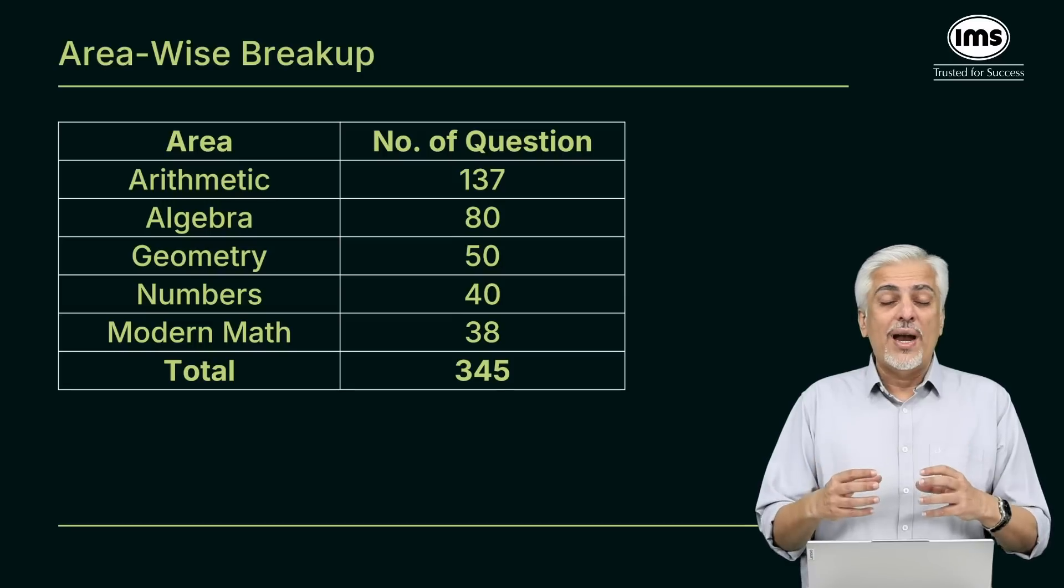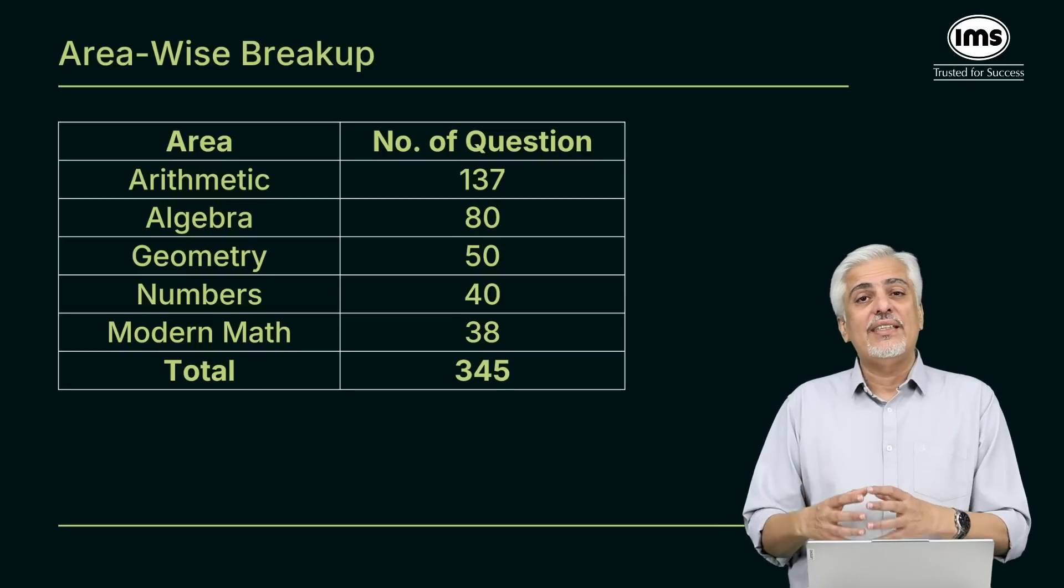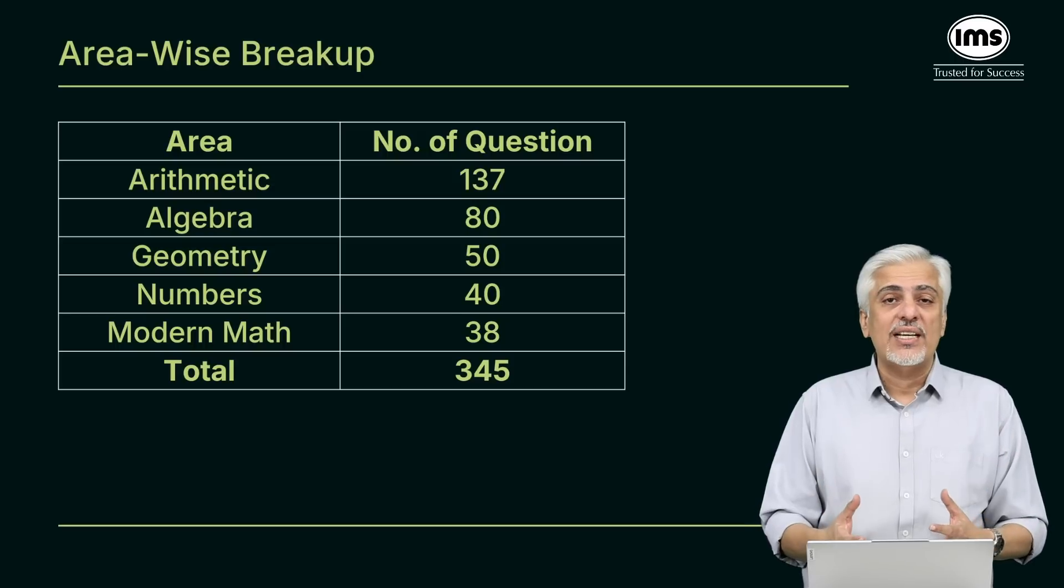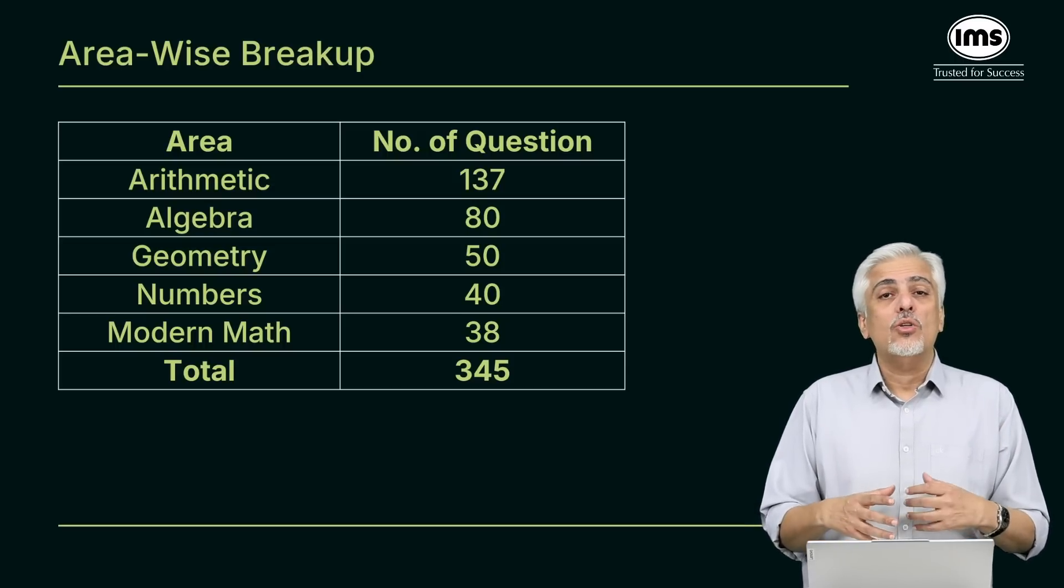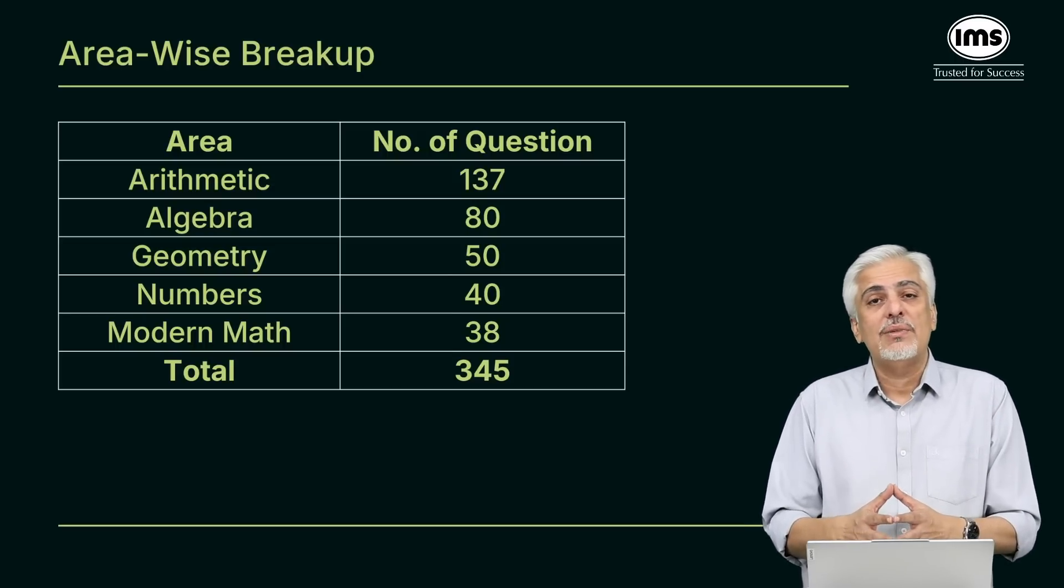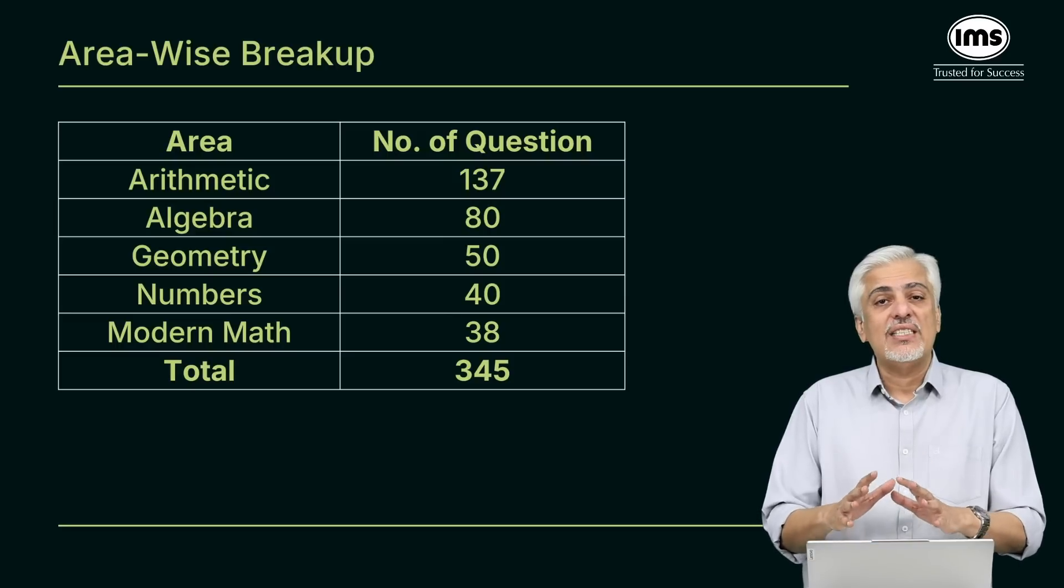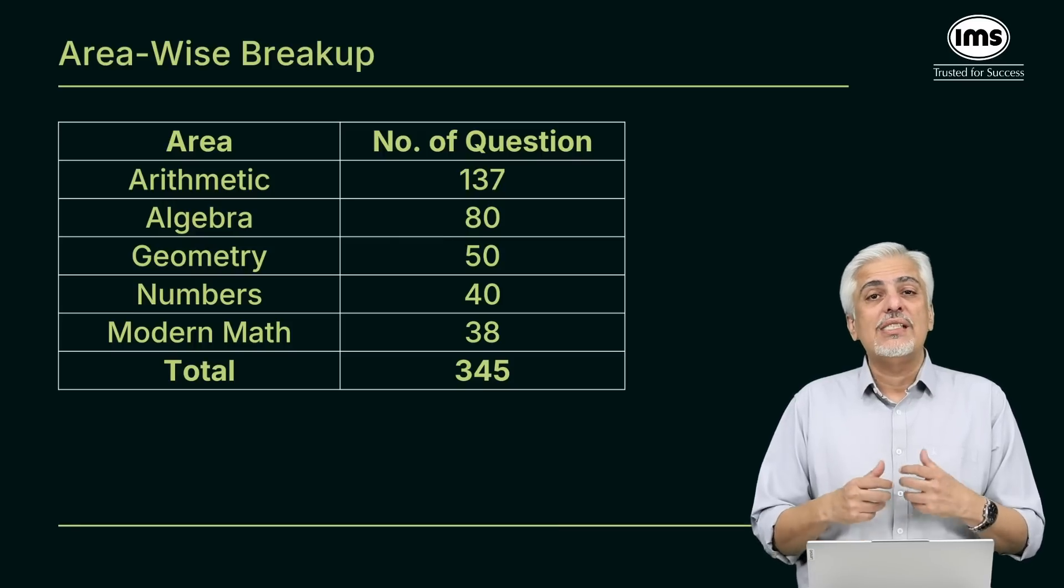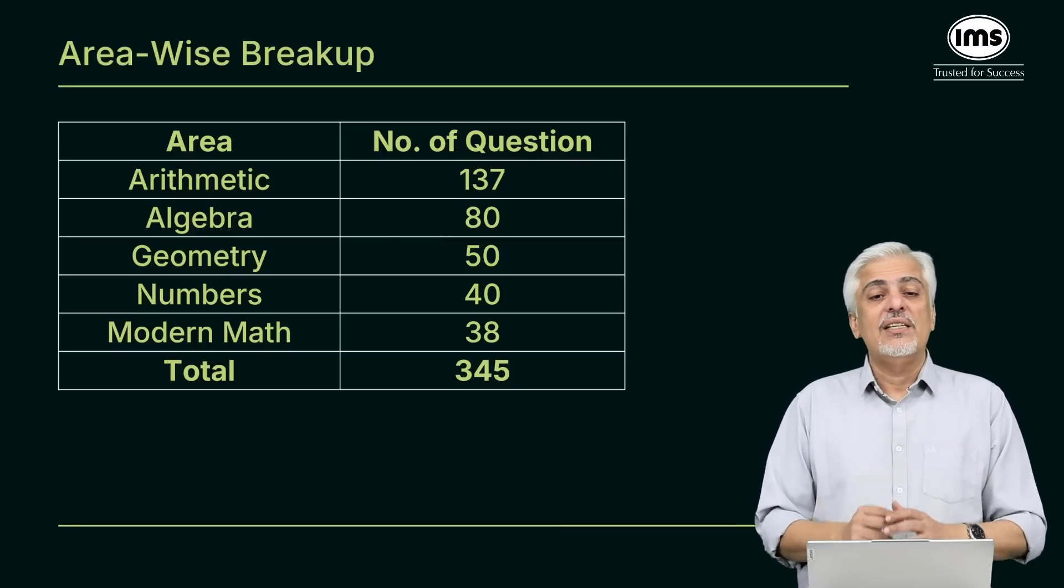I also think why is arithmetic more important than other areas, because when you actually look at how many level A questions are asked in CAT, a lot of them are from arithmetic. Out of these 137 questions, approximately a good 55-60 questions will be level A or even more. And hence when you're searching for those level A questions, arithmetic really helps you.